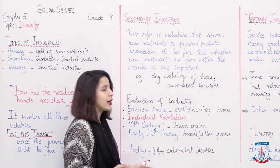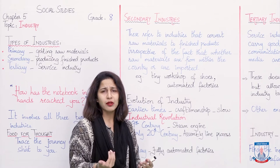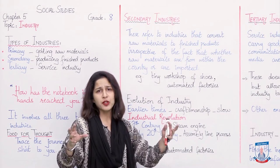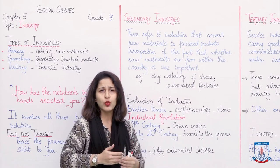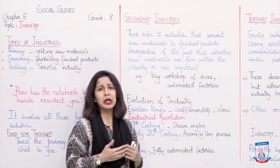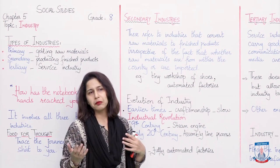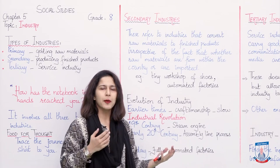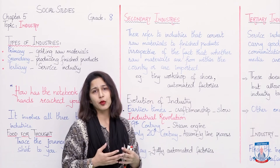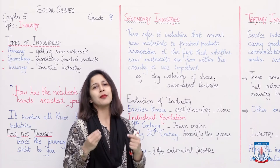Then came our today's era of fully automated industry — like the car example we just discussed. All that work is done by different machines, and then at the end, through the assembly line, it is converted into a car. Apart from the car example, you can take the example of toys — Avengers, Goblins, Spider-Man — all these robots and toys that you see are also made on the same pattern using the same method.